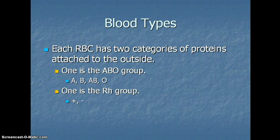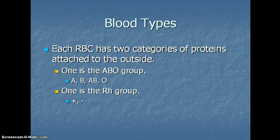Our red blood cells are also involved with our blood types. Each red blood cell has two categories of proteins attached to the outside of the cell. One is the ABO group. There are four possibilities within the ABO group: you can have A blood, B blood, AB blood, or O blood. The other category of proteins is the RH group. You can either be RH positive or RH negative.